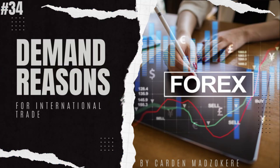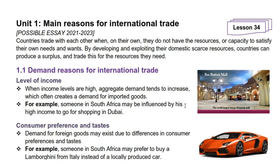Let's now get into today's lesson. The previous lesson was a test on public sector and so we had no homework. In today's lesson we will introduce Unit 1 by looking at demand reasons for international trade. Countries trade with each other when, on their own, they do not have the resources or capacity to satisfy their own needs and wants. By developing and exploiting their domestic scarce resources, countries can produce a surplus and trade this for the resources they need.